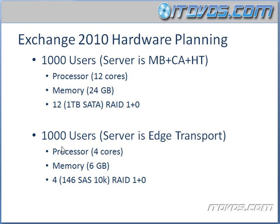So that's our first server. Our second server is our Edge Transport server — it certainly takes a lot less resources than our first server. It's going to depend on what you're using it for. If you're doing spam processing or antivirus on it, that's going to increase your processor and memory needs. But in this example, we're going to need about just four cores as far as processors are concerned, and about six gigs of memory — not too much.